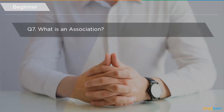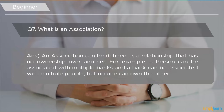The seventh question is: what is an association? An association can be defined as a relationship that has no ownership over the other. For example, person X has accounts in banks A, B, and C. The banks are associated with person X, but neither the person possesses ownership over the banks, nor do the banks possess ownership over the customer. This relationship is called an association.